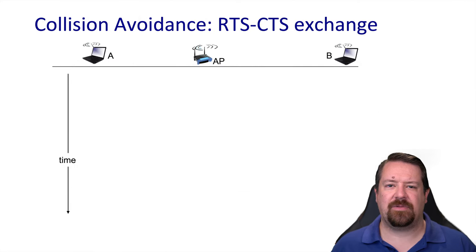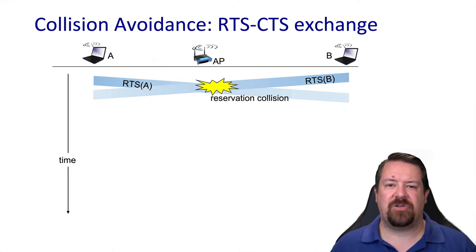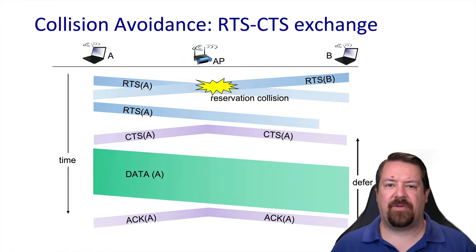In the RTS-CTS exchange example, hosts A and B both send RTSs at approximately the same time and they collide, so the base station cannot interpret them and issues no clear to send. After random backoff, A retries first with its RTS. Although A's RTS doesn't reach B due to attenuation, the base station transmits the clear to send, so B knows not to transmit during the specified time. B defers, and A now has the channel to transmit its data frame. When that frame arrives at the access point, it transmits the acknowledgement, confirming no collision occurred.